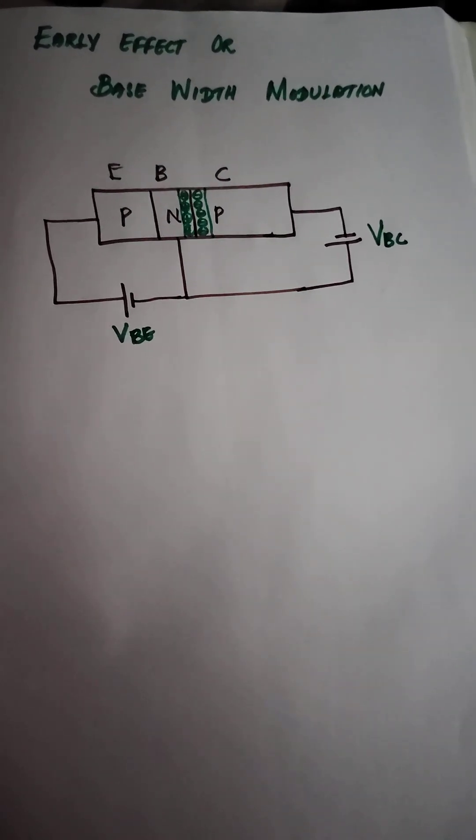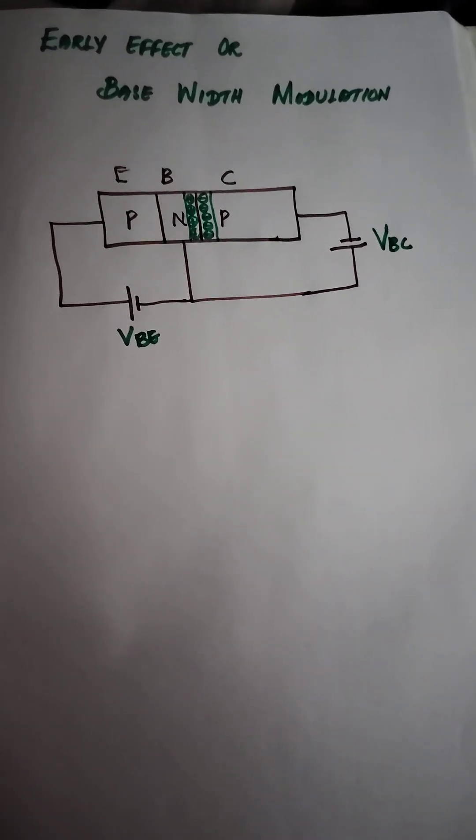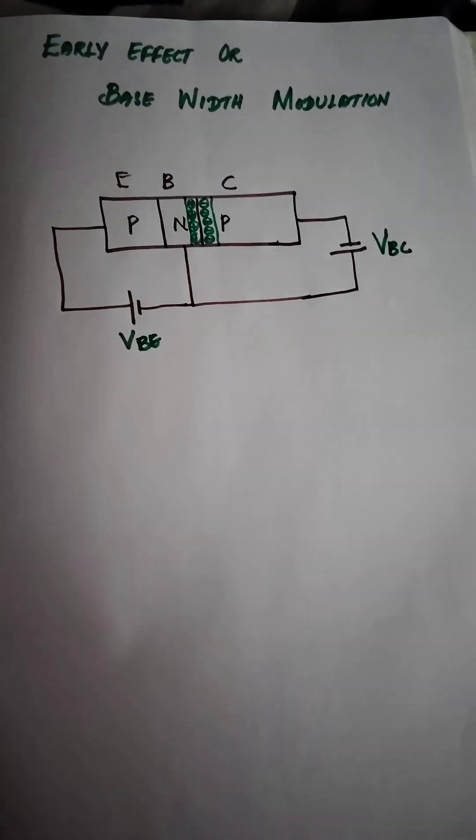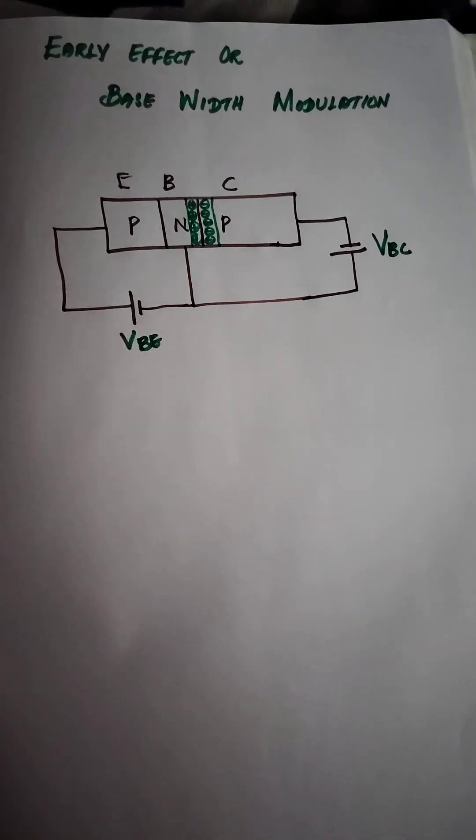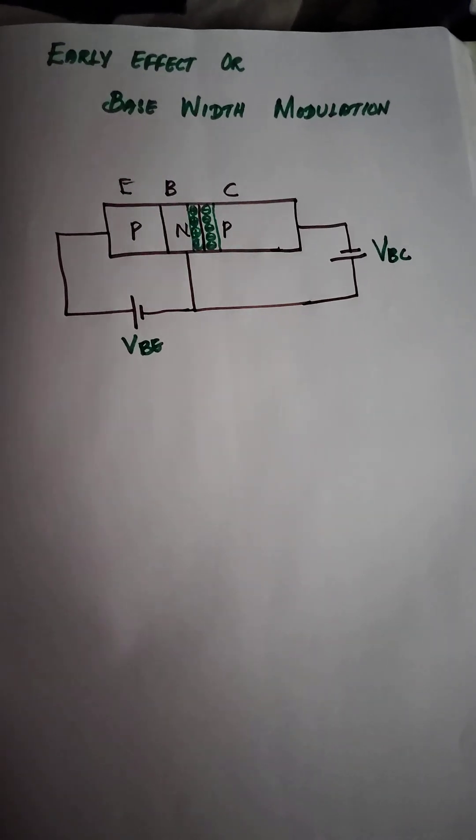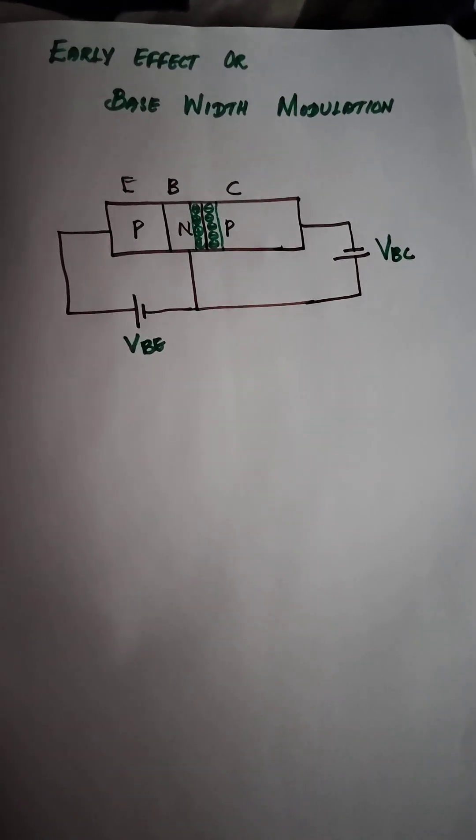As a result, the effective width of the base is reduced, and the collector current increases rapidly. That's why it's called base width modulation. Thank you.